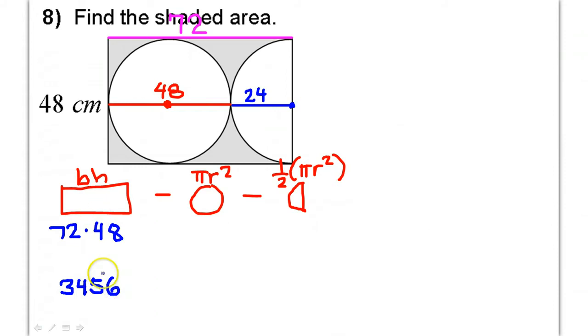Okay, that's the area of the rectangle. Now, we're supposed to be subtracting the area of the circle. The area of the circle is pi radius squared. So, that's pi times 24 squared.